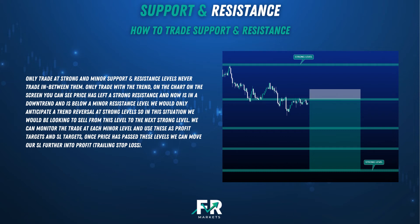Now we've spoken about breakouts, fakeouts, and how to trade breakouts. Let's talk about how to trade at support and resistance. Only trade at strong and minor support and resistance levels, never trade in between them, and only trade with the trend. On the chart you can see price has left a strong resistance and is now in a downtrend below a minor resistance level. We would only anticipate a trend reversal at strong levels. In this situation we would be looking to sell from this level to the next strong level. We can monitor the trade at each minor level and use these as profit targets and stop-loss targets.